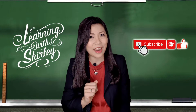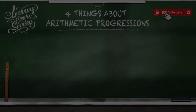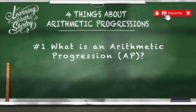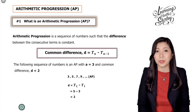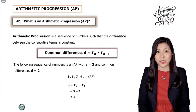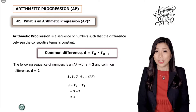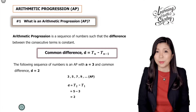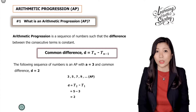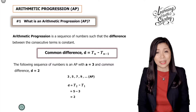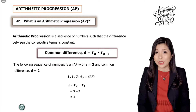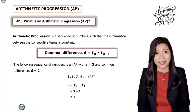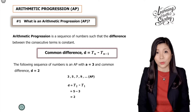Let's take a look at what is arithmetic progression. An arithmetic progression is a sequence of numbers such that the difference between the consecutive terms is constant. For instance, 3, 5, 7, 9 and so on is an arithmetic progression with the first term a equals to 3 and the common difference equals to 2.